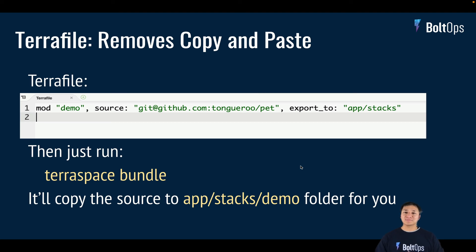Some people might be thinking: all my code is in separate repos already, I don't want to copy and paste everything in. TerraSpace has an additional concept called TerraFile, where you define your modules in a centralized location — one file. You run something called TerraSpace bundle, and it actually downloads all the modules into the repo and locks them too. So you centrally manage all your Terraform modules in one place with a TerraFile lock file. You just add a line to your TerraFile, specify the module name, the GitHub repo, and export to — then run TerraSpace bundle, and you can run TerraSpace up and see no difference at all.